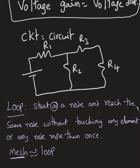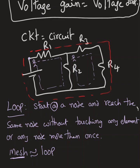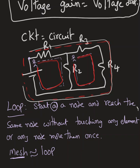Starting at this node, I'm going to come back to the same node without touching any element more than once — that is called a Loop. Same way, if I start here, this is another loop. So I have two loops there. Or, I can start and walk all around and come back to the same node without touching any element more than once — that is also another loop. This big one is definitely a loop, but it's not a Mesh. The small ones I can call either Mesh or Loop, but the big one I can call only a Loop, not a Mesh.